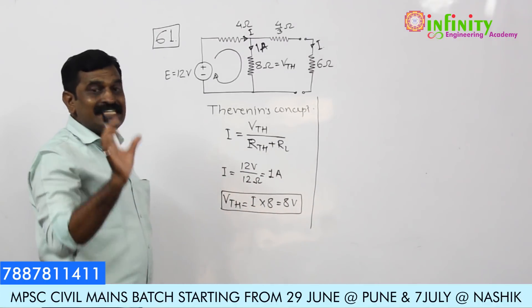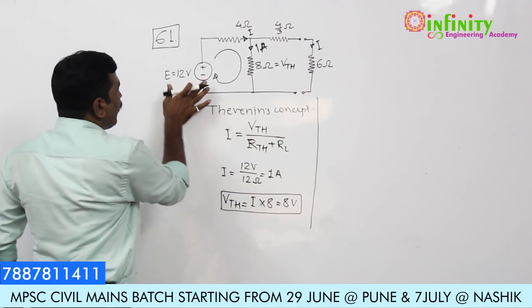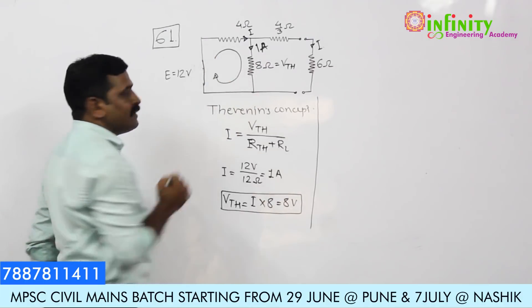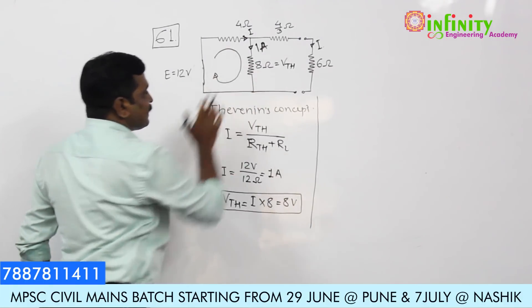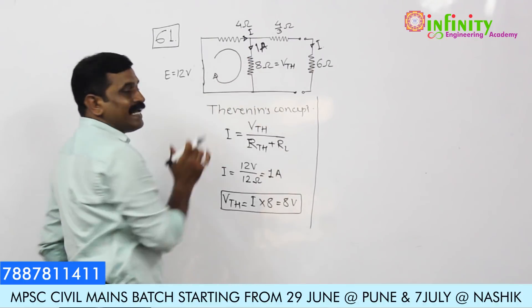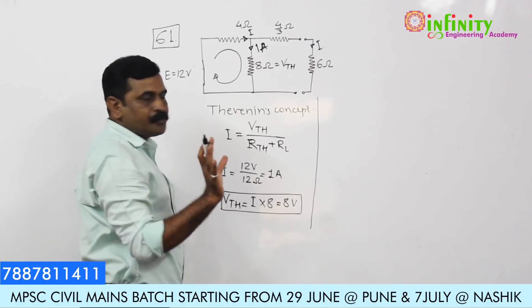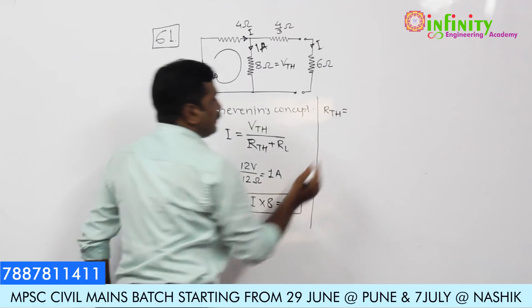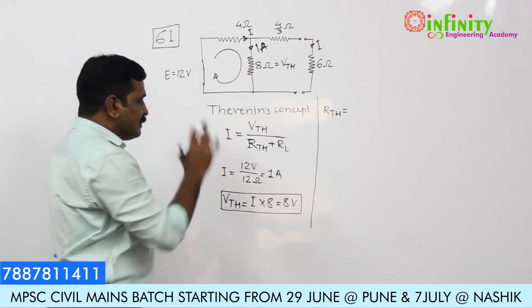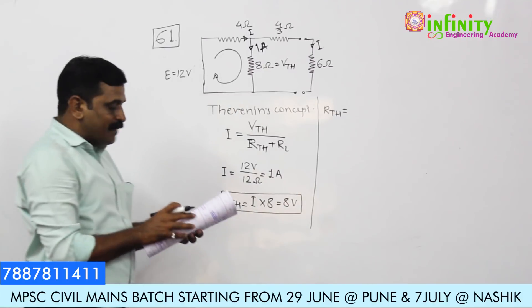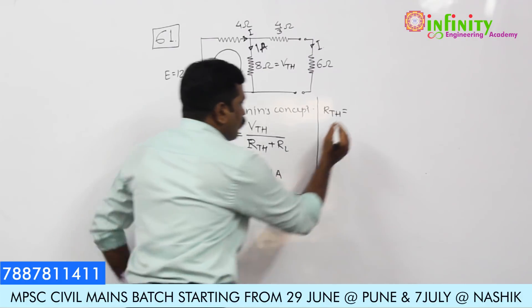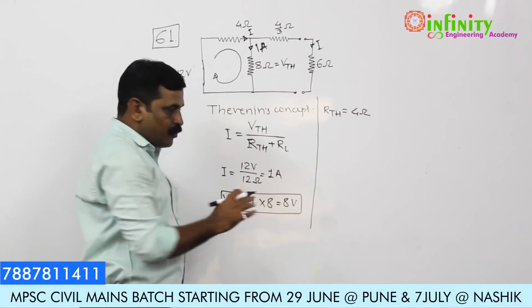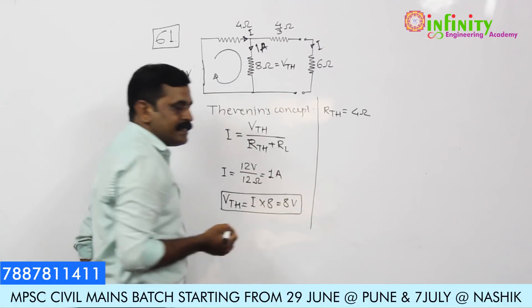For the Thevenin's equivalent resistance, we short circuit the voltage source and consider the purely passive resistive network. These two resistances are in parallel with each other, and this combination is in series with the other part. After simplification, Rth equals 4 ohm.